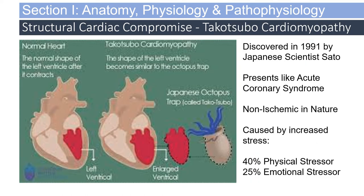It's not uncommon to know somebody who has perished from broken heart syndrome. There is a type of cardiomyopathy called Takotsubo cardiomyopathy, discovered in 1991 by Japanese scientist Seido. It presents like acute coronary syndrome but is non-ischemic in nature, caused by physical and emotional stress. It gets its name because the left ventricle becomes enlarged to take on the shape of a Japanese octopus trap called the Takotsuba. This affects cardiac output.